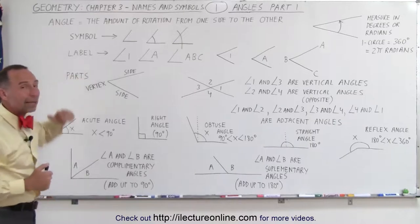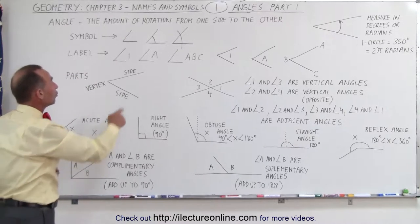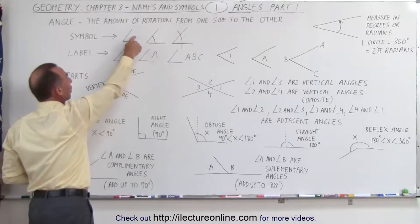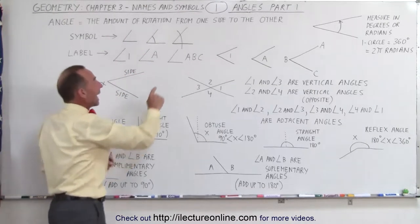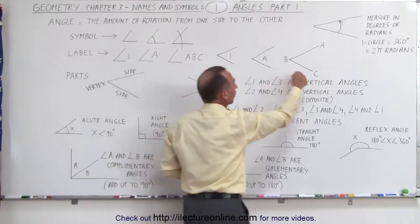Notice we also want to be able to label angles. Sometimes we use numbers, so we put the number along with the symbol. Sometimes we use the letters of the alphabet. And sometimes we indicate the angle by showing over here.